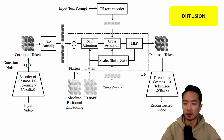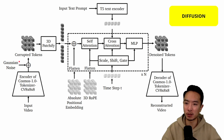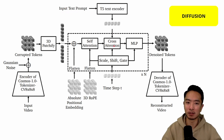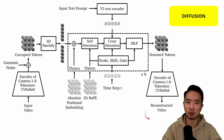Here's the architecture of the Diffusion model. Starting from the bottom with the input video, this goes into the encoder of the Cosmos 1.0 tokenizer, which turns the video into tokens. At the same time, Gaussian noise is injected — this is the core of how Diffusion models work. The tokens get corrupted and passed into a 3D-Petrify block. Then absolute position embedding and 3D RoPE feed into the self-attention block, followed by cross-attention where the input text prompt is encoded and passed in. Finally, it passes through an MLP, gets denoised, goes into a decoder, and we get a reconstructed video.